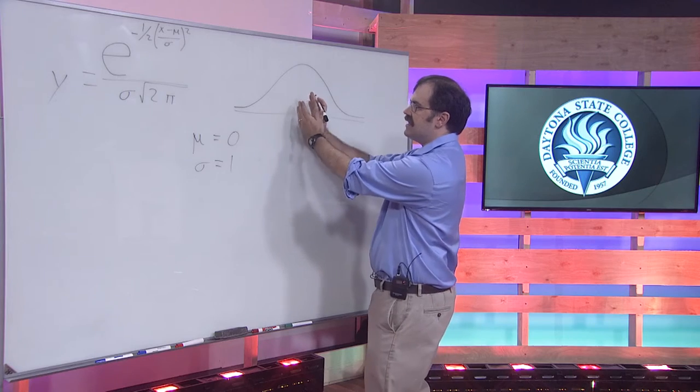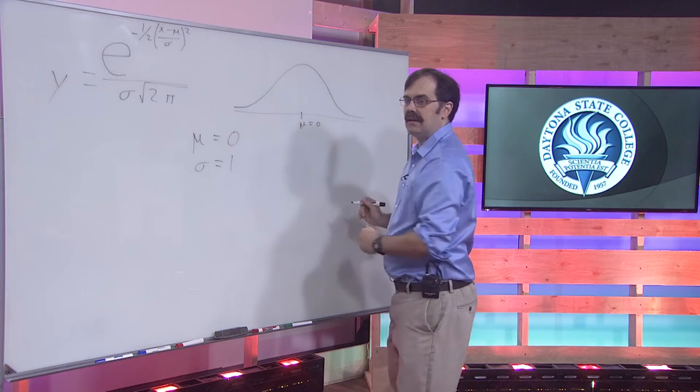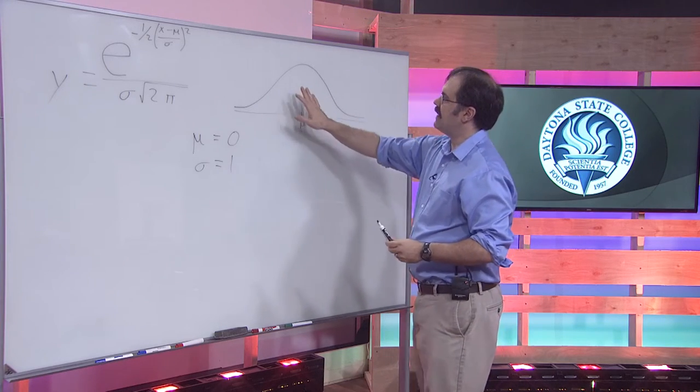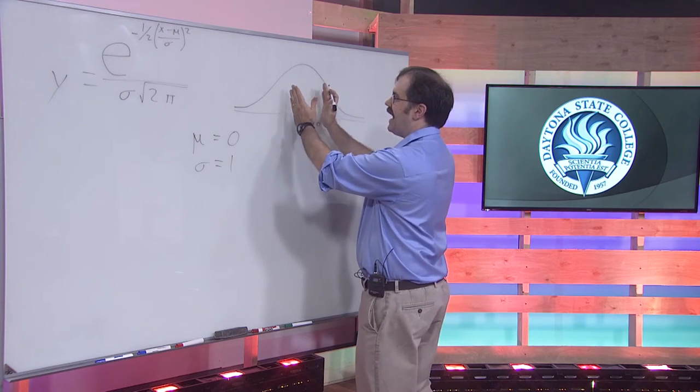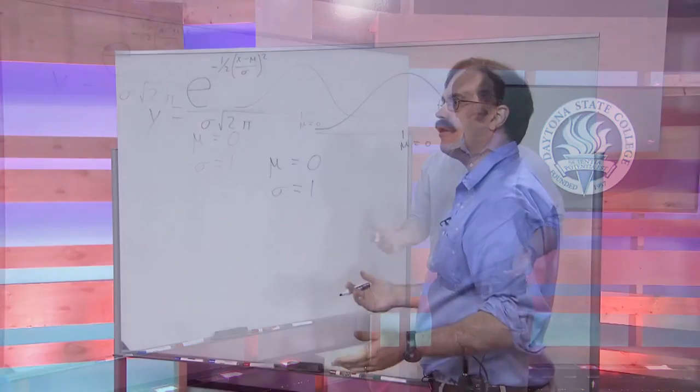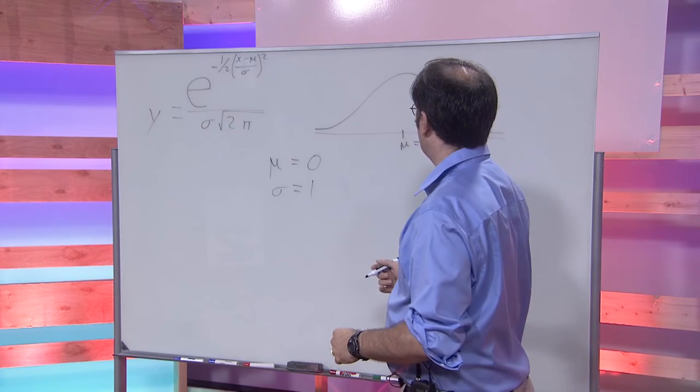And remember, the standard deviation tells you how spread out this shape is. And we'll see in just a little bit that this shape really does have the same properties that we saw earlier when we looked at the empirical rule.